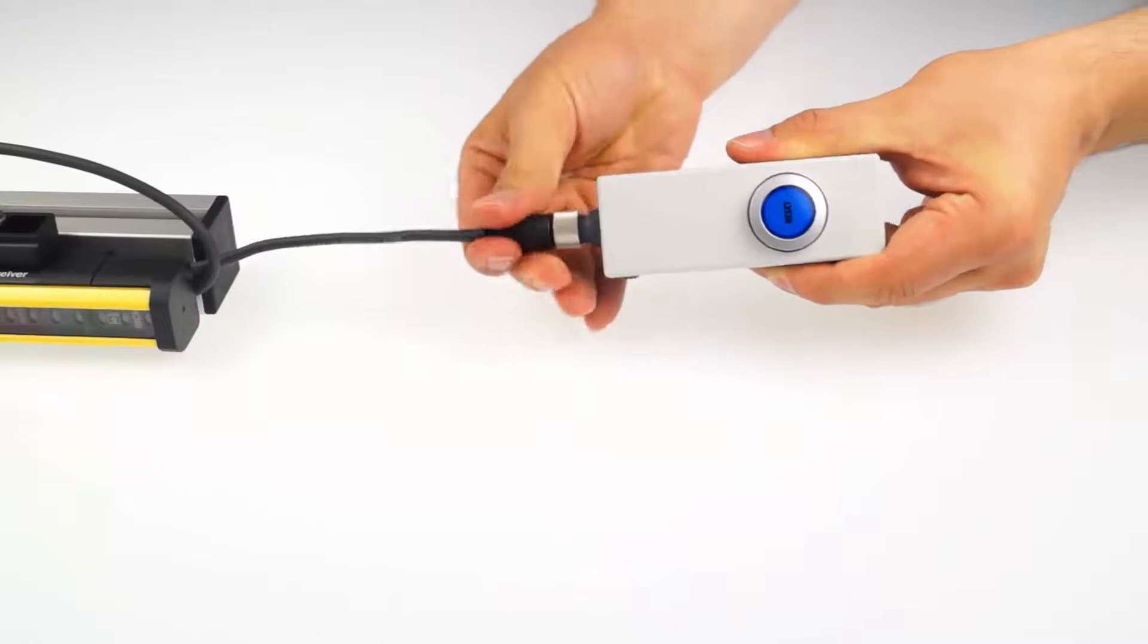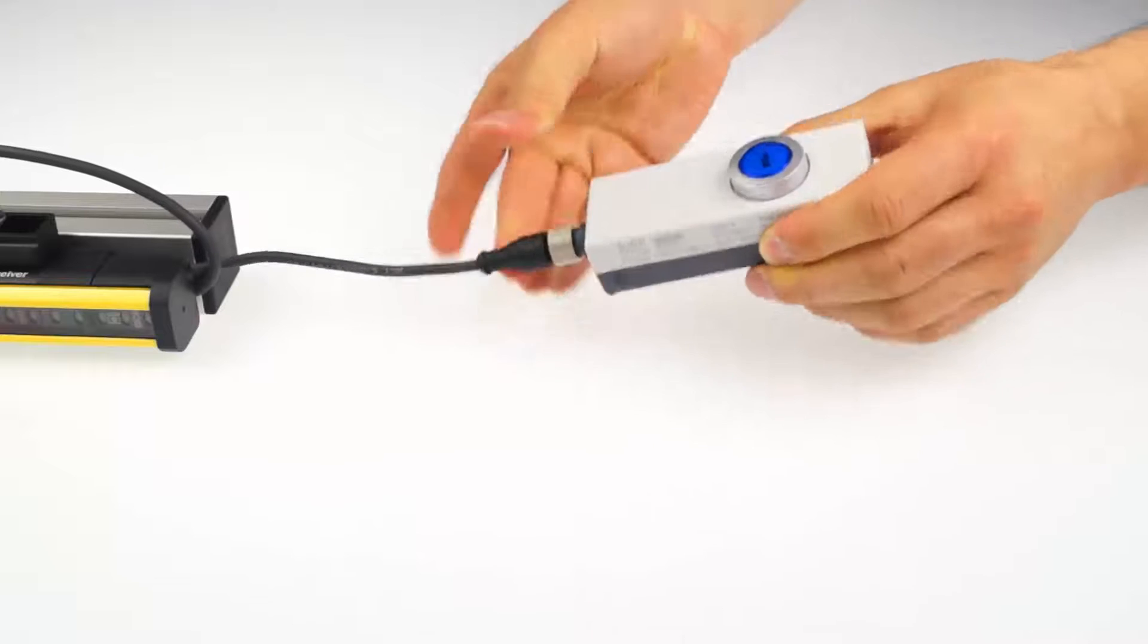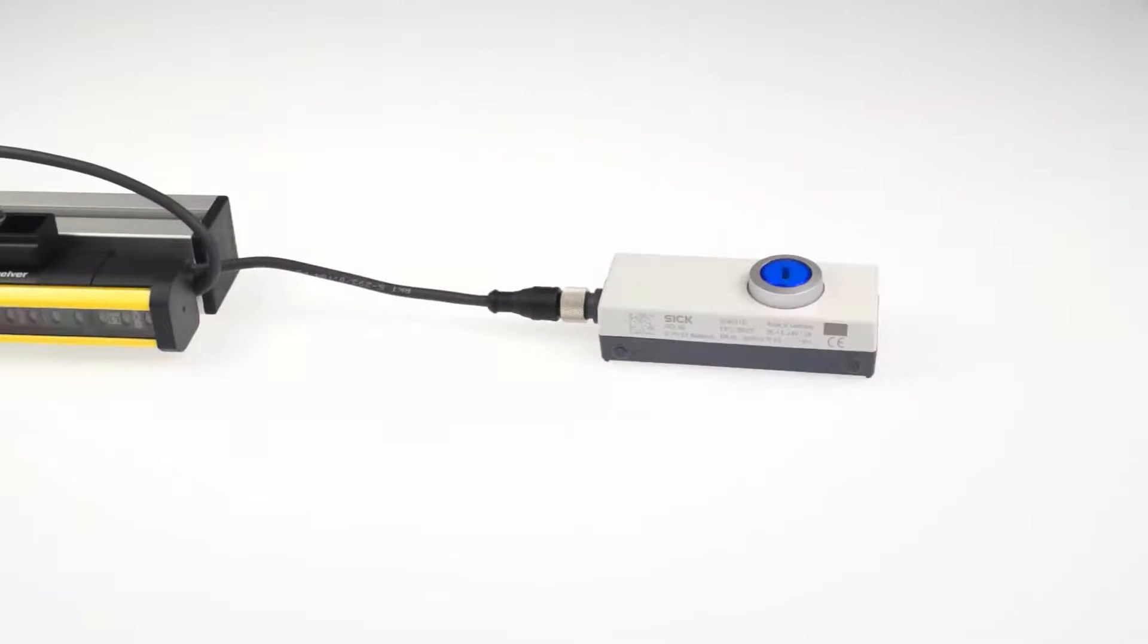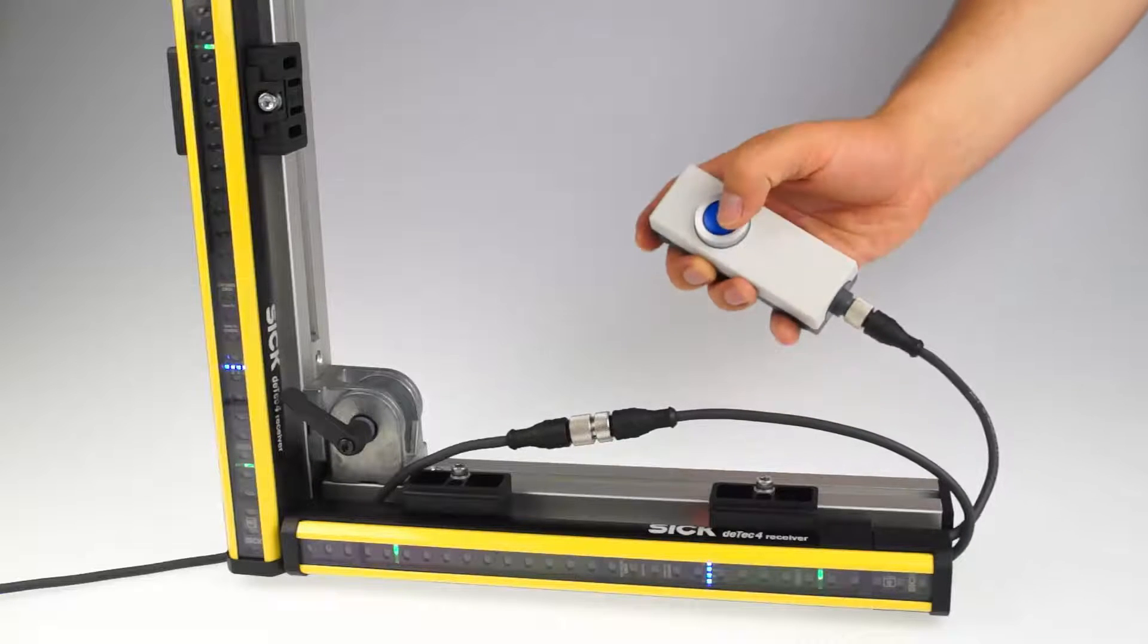While being disconnected from the power supply, connect the reset button to the open end of the extension connection on the receiver side, at the end of the cascade. Then connect the system again with the power supply. And within 30 seconds you have to press the reset button and release it after 1 to 3 seconds.